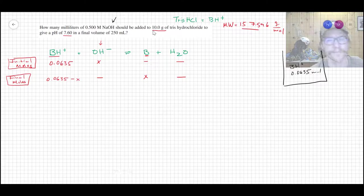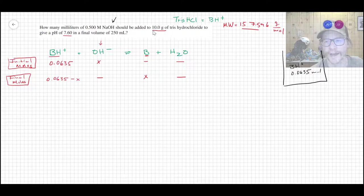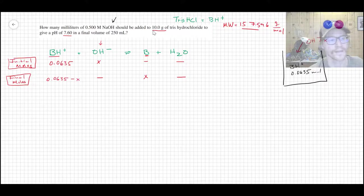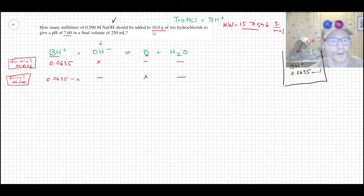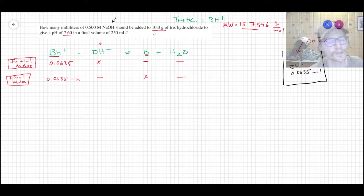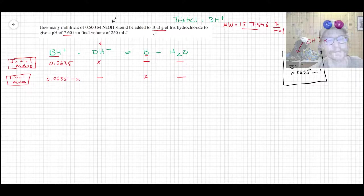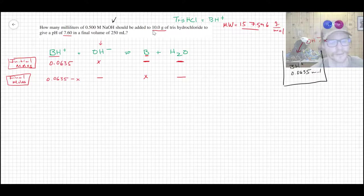That gives me this initial moles here of 0.0635. And so the way that I have this written out is in the beaker. Let's just imagine that we've got this beaker, and you've got BH+ in there and you have 0.0635 moles of it hanging out. Now you need to figure out how much of the hydroxide in the form of half molar sodium hydroxide aqueous you need to add to the system.